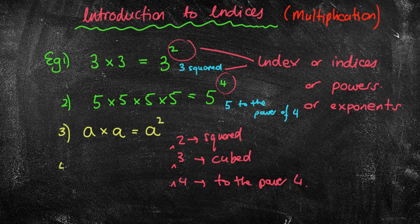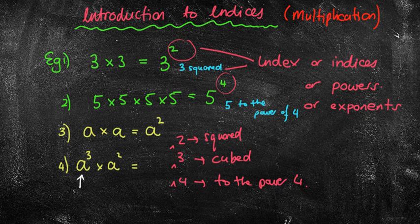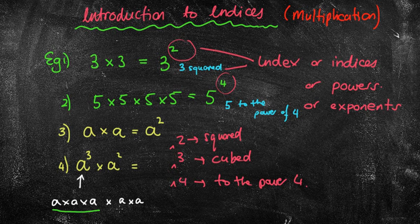And what we're going to be doing is getting slightly more challenging questions, when there might be things like a to the power of 3 times a to the power of 2. I'll get you to write this down, because underneath, what I want you to write is we're going to expand a cubed out into a times a times a, because there are three of them. And then we're timesing two more together. So you can see the first lot is a cubed, the second lot is a squared, but how many do I have all together? There are five of them all together, so we would call that a to the power of 5.